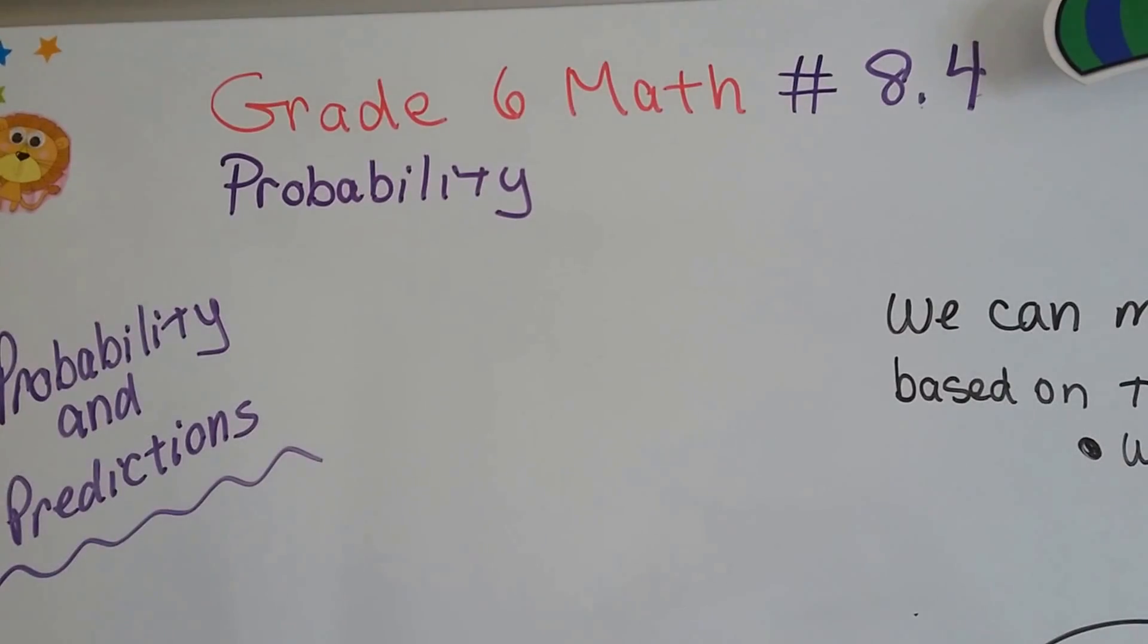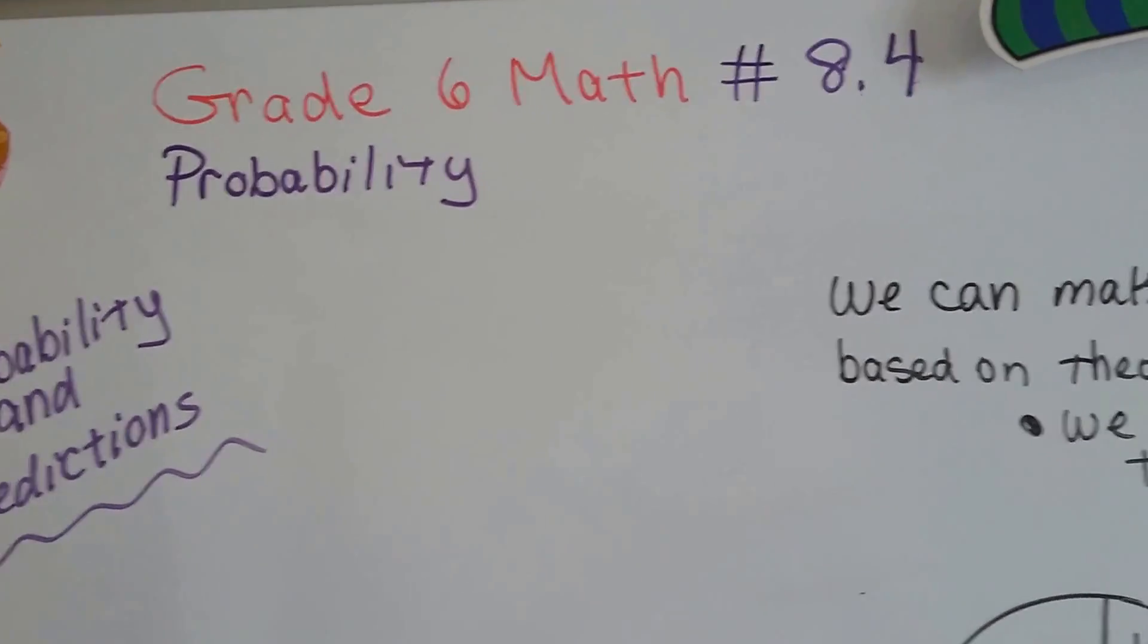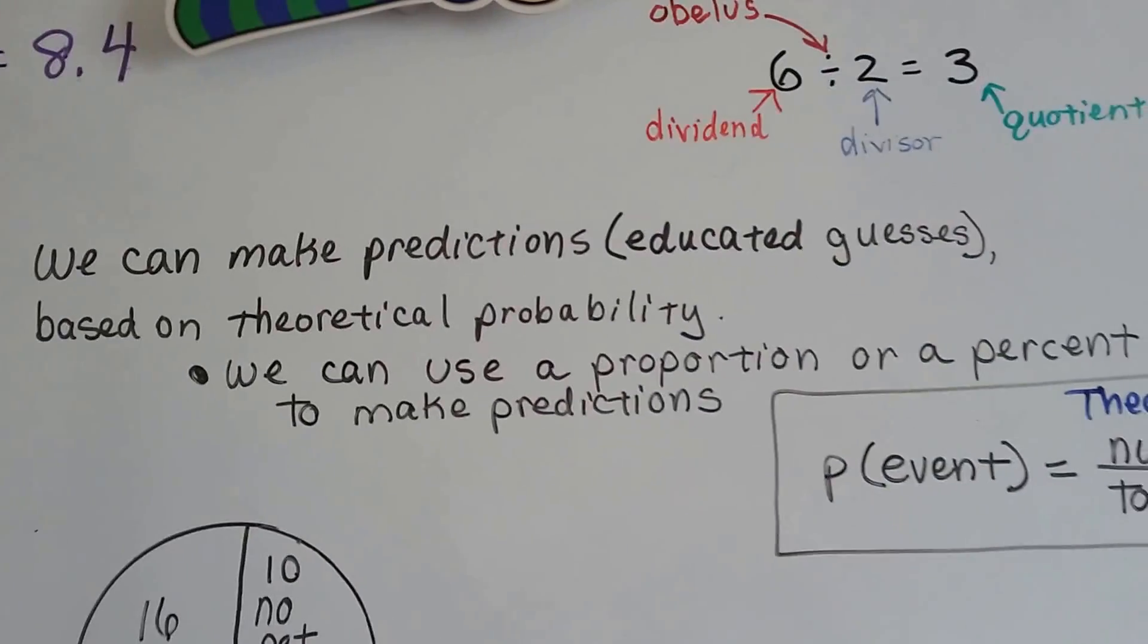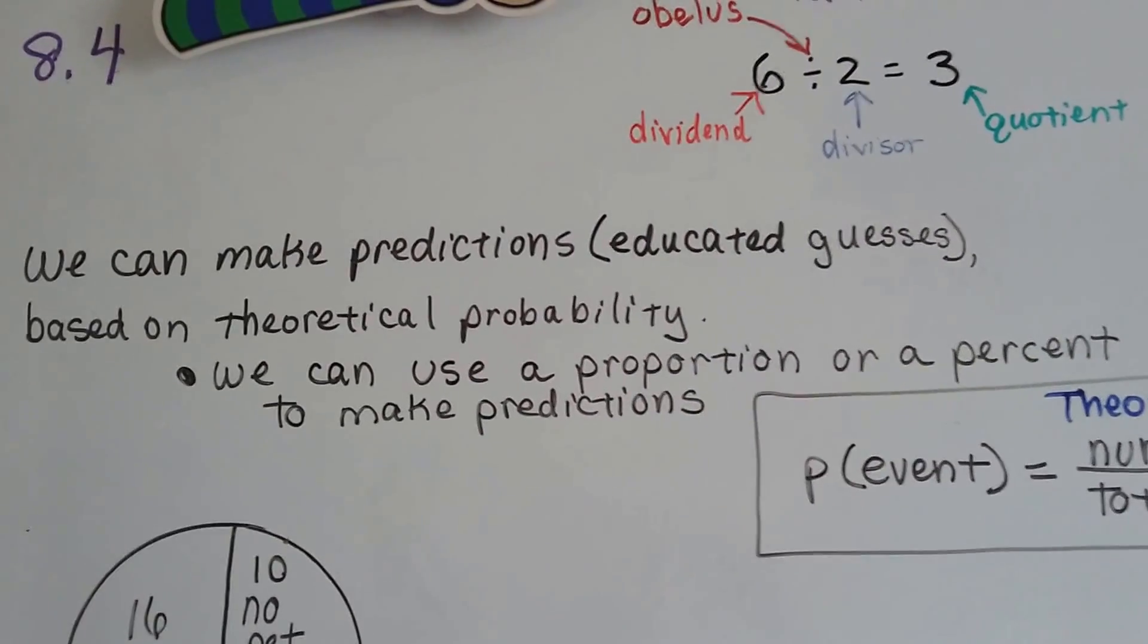Grade 6 math number 8.4, probability and predictions. We can make predictions, educated guesses, based on theoretical probability.